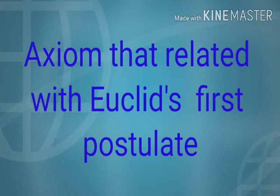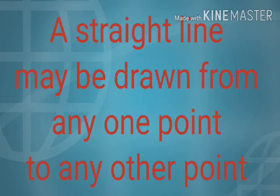What is Euclid's first postulate? A straight line may be drawn from any one point to any other point. This is postulate one. About this, there is an axiom that we will study now.